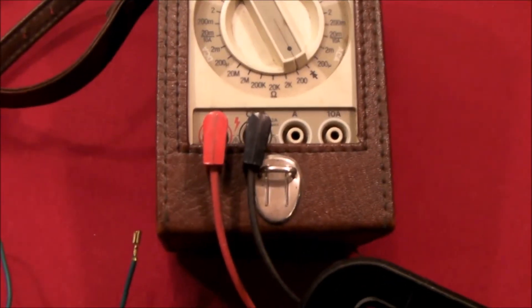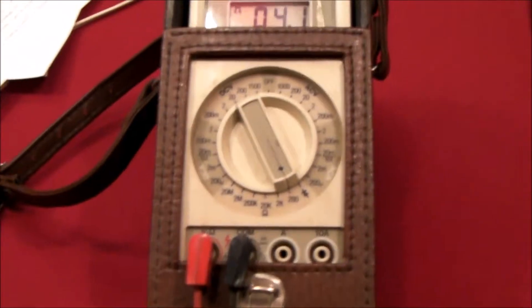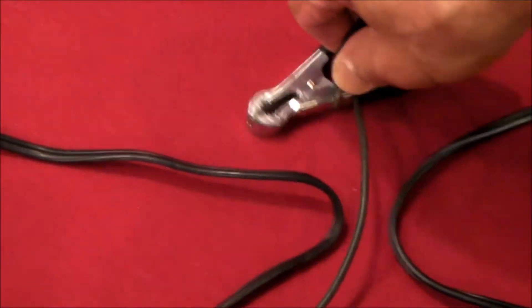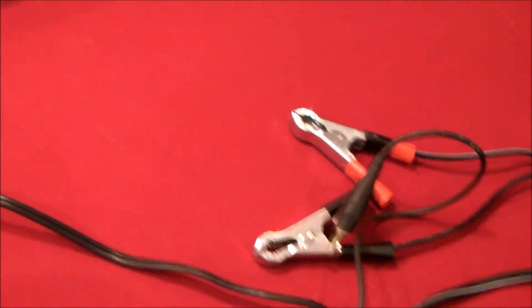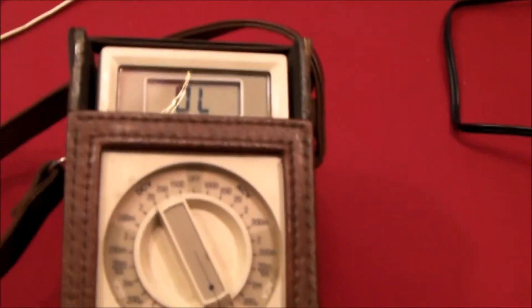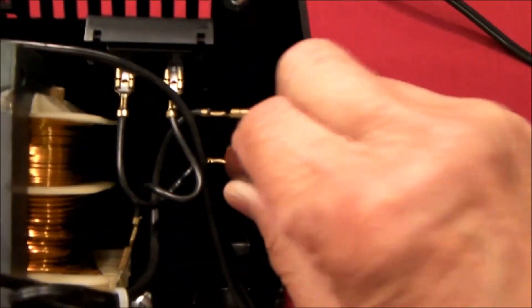However, when I go to the black lead, which the circuit comes through the breaker, the circuit breaker here, I have an open circuit. So there is no continuity between actually this wire right here, which runs down through the strain relief.